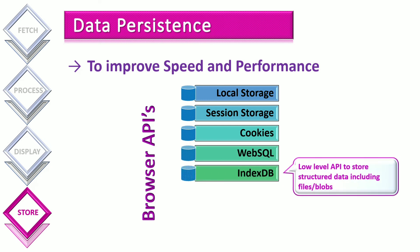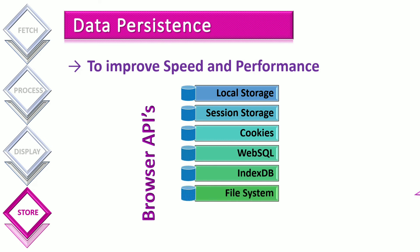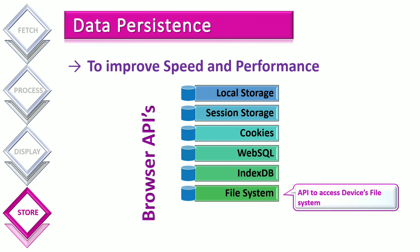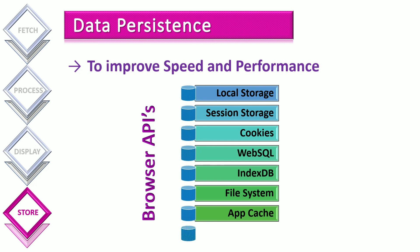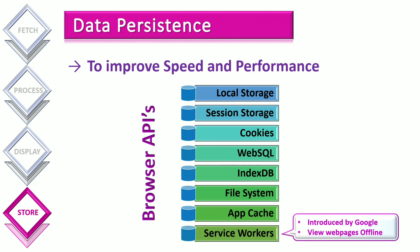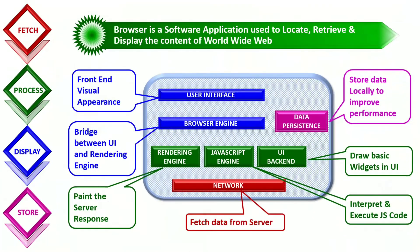IndexedDB is a low-level API for storing a significant amount of structured data, including files or blobs. File System is an API to access the device's file system; it was introduced in HTML5 and is used to store a website's static content. Service workers are a new way of storing data as an API for offline usage.